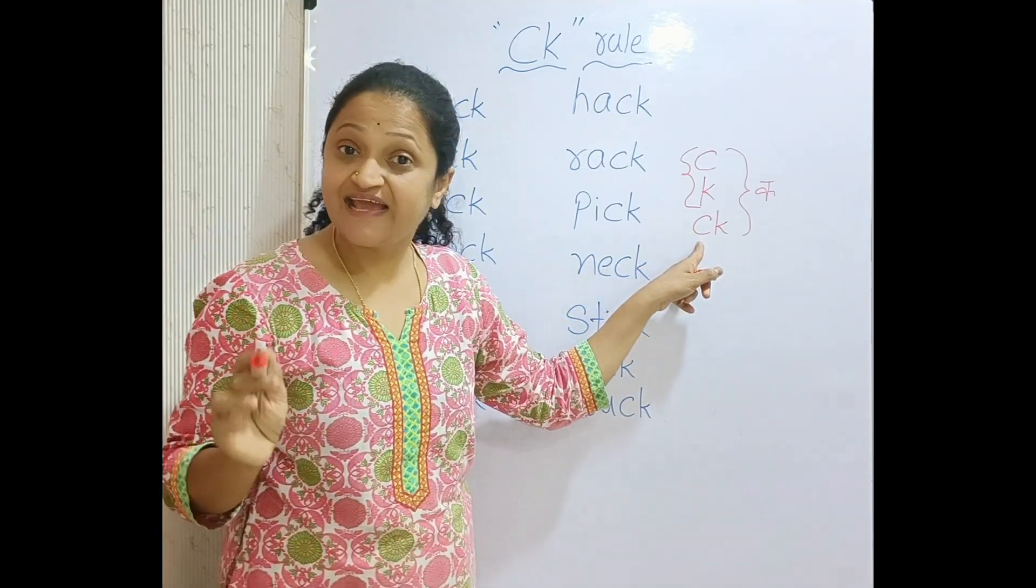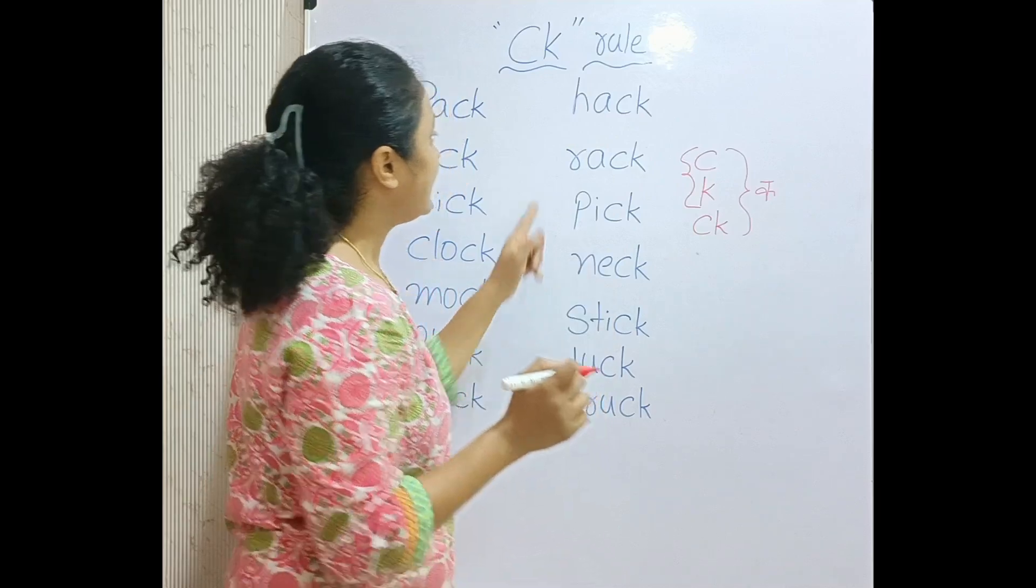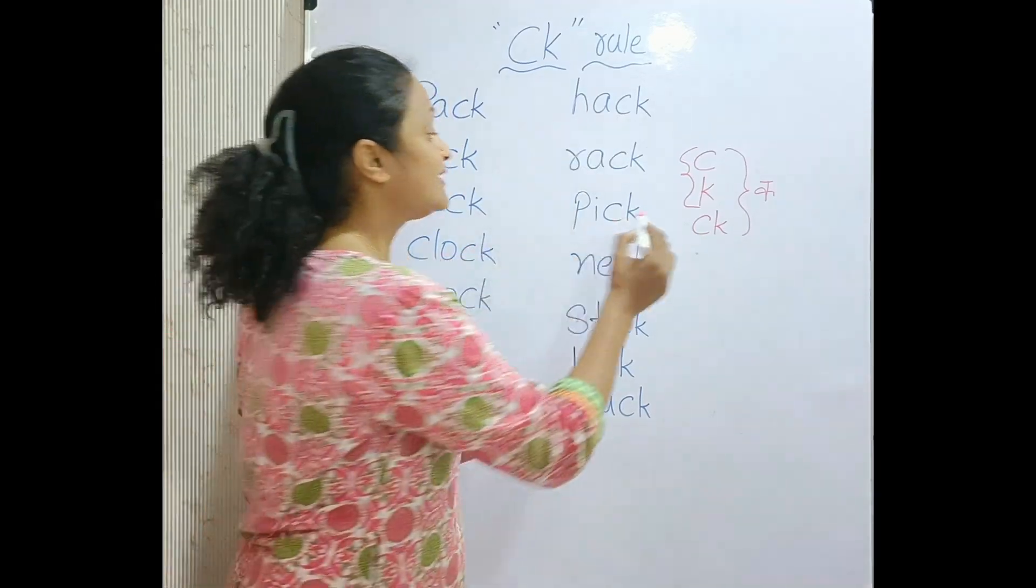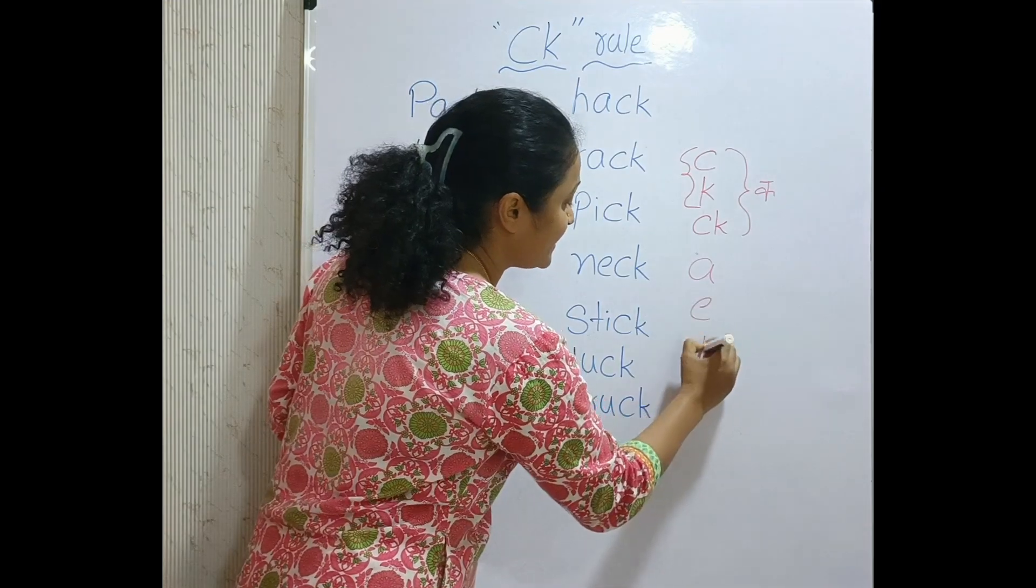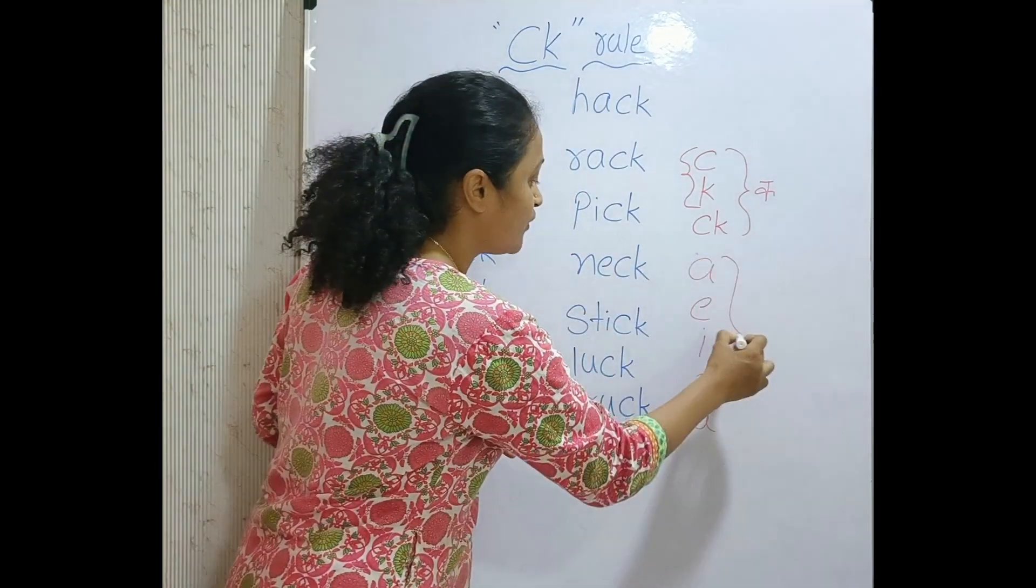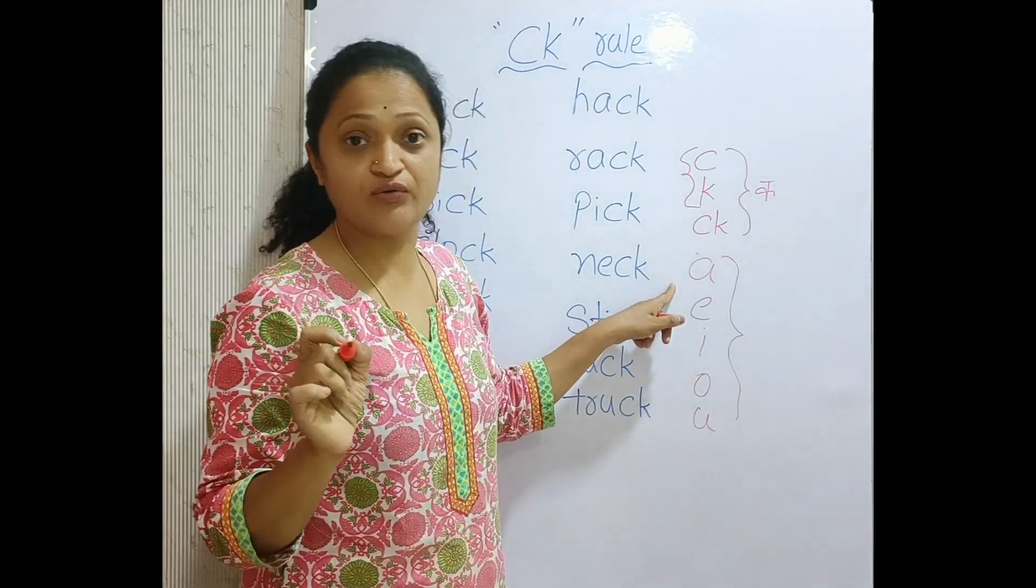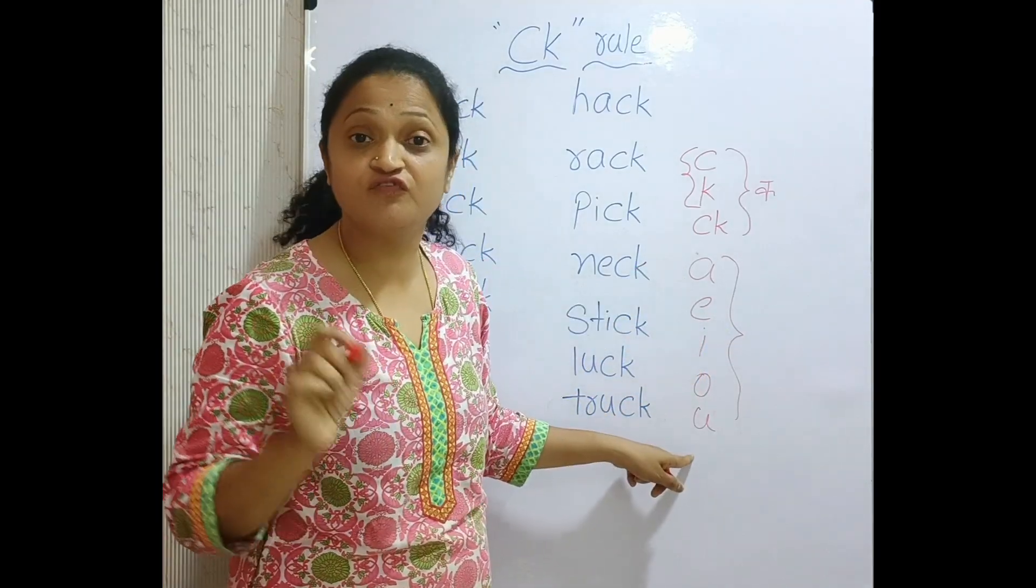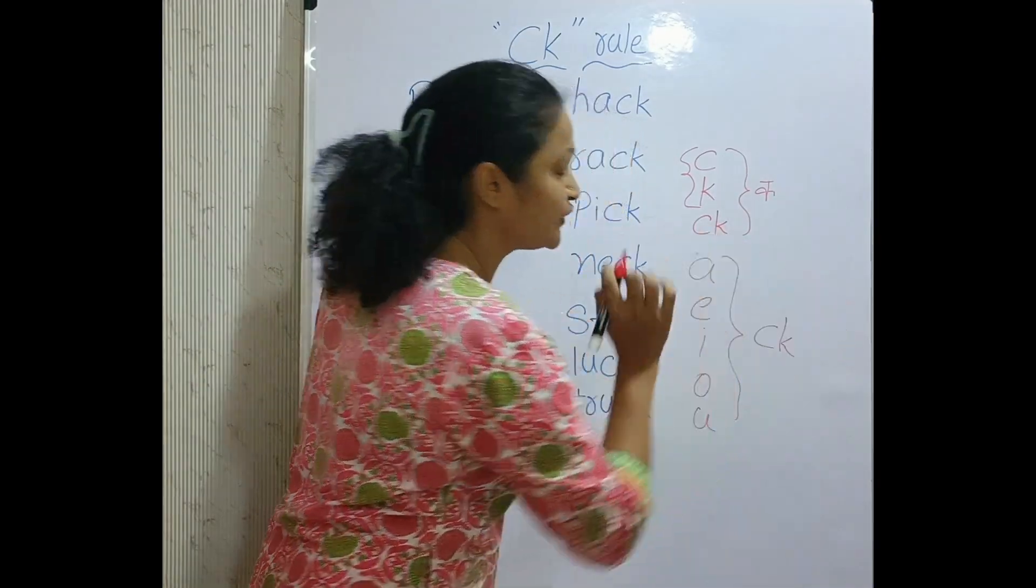So CK sound is K. If you hear the K sound after short vowel A, E, I, O, U—these are the vowels—if you hear the K sound after these short vowel sounds, you will write CK together.